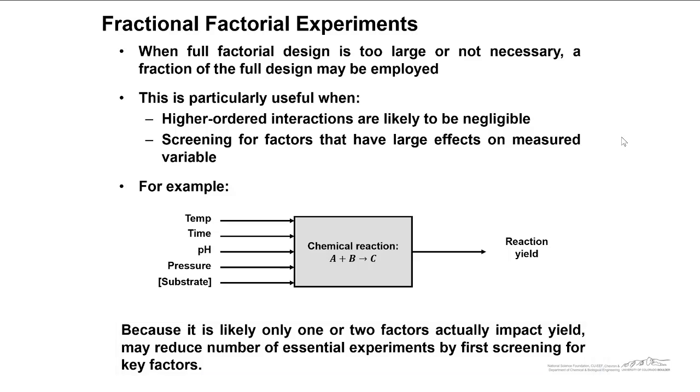And so we've got a lot of factors here. We have five. We're early on in our characterization. Higher order interactions are likely to be negligible, or we are not very interested in those higher order interactions at this point. And so we're just trying to screen through to eliminate the insignificant factors. This is an example of where we might want to use a fractional factorial design.